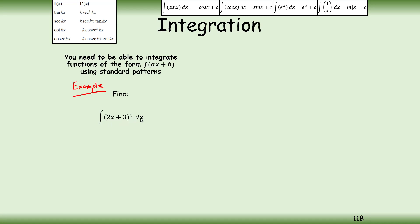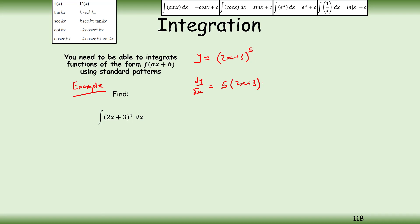Find the integral of (2x + 3)^4 with respect to x. What would I differentiate to give (2x + 3)^4? If I try y = (2x + 3)^4, differentiating would reduce the power. So I'll increase the power to 5 and try y = (2x + 3)^5. Differentiating by the chain rule: dy/dx = 5·(2x + 3)^4 times the differential of the bracket, which is 2, giving 10·(2x + 3)^4. I'm nearly there but I've got 10 times as much.